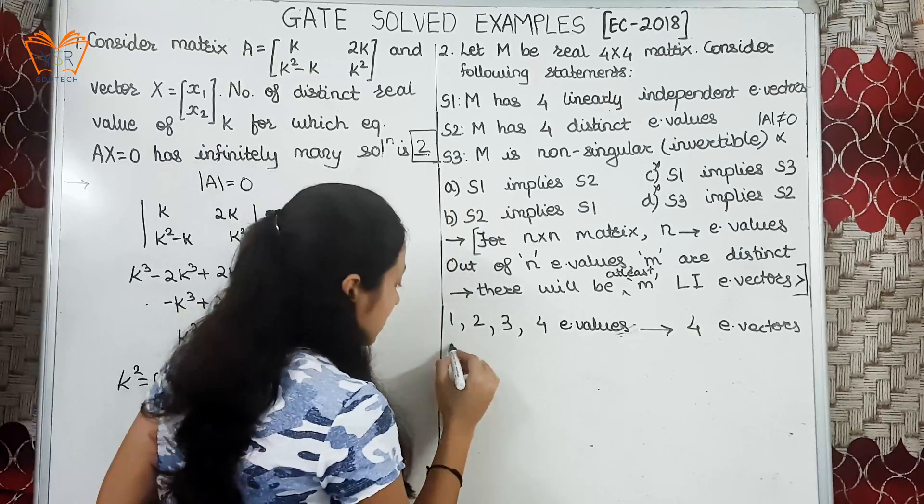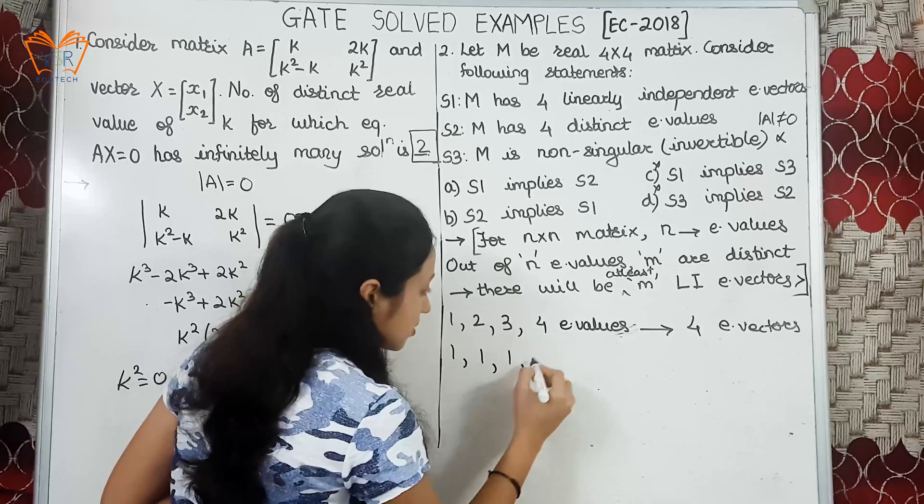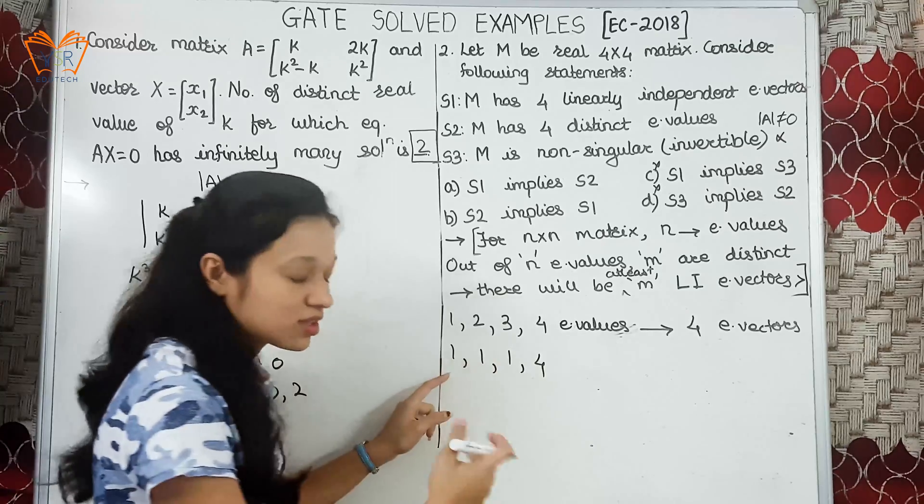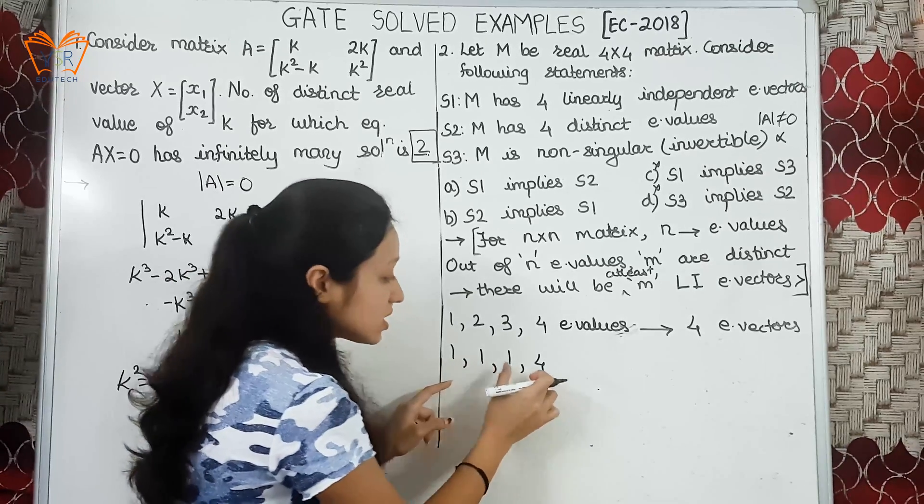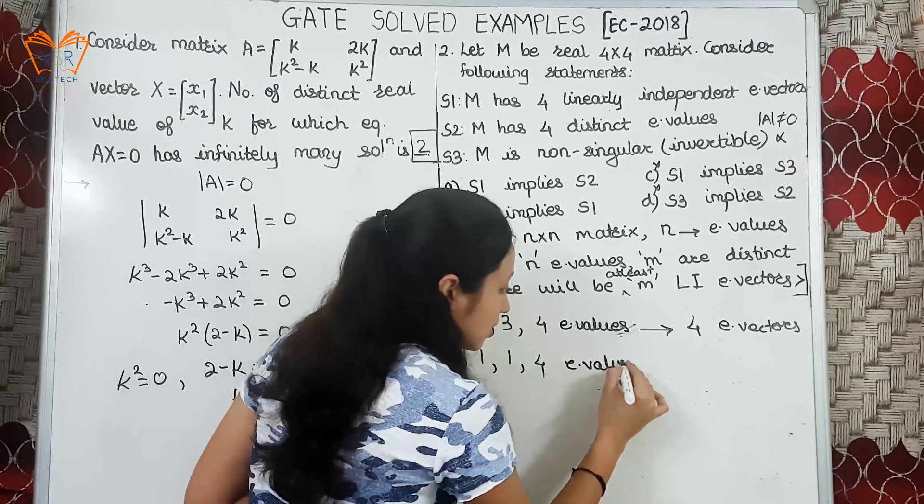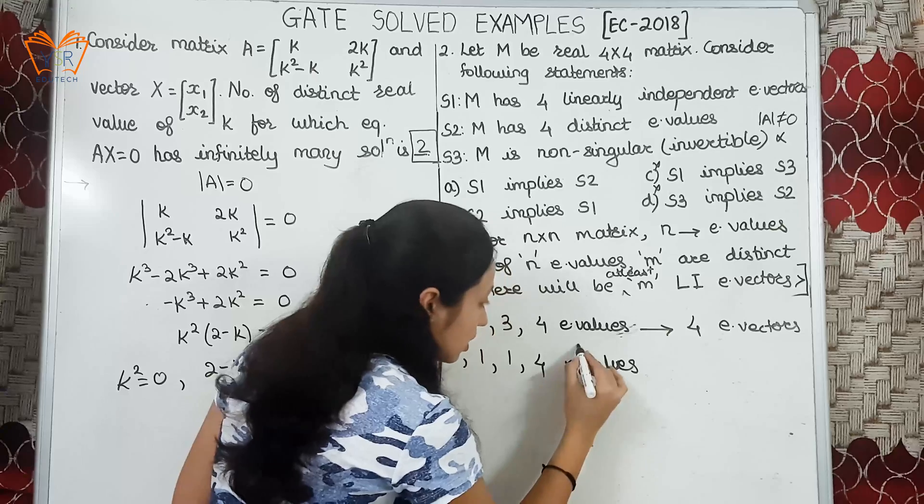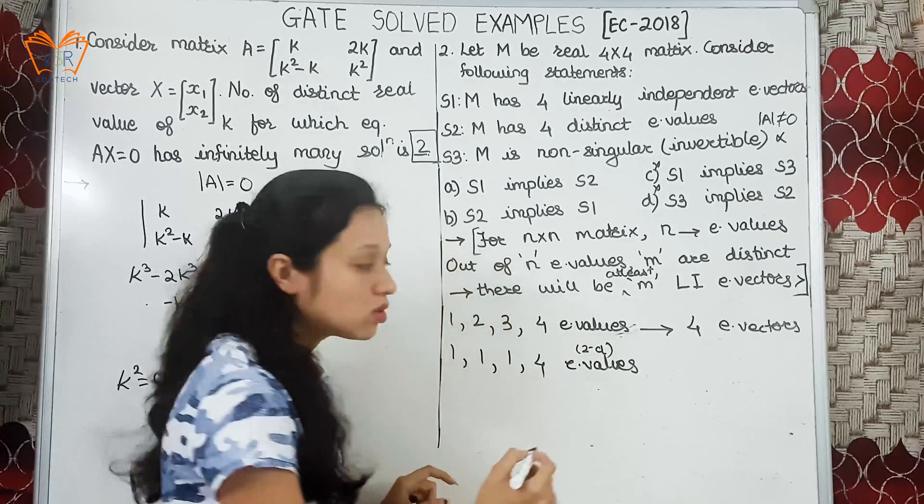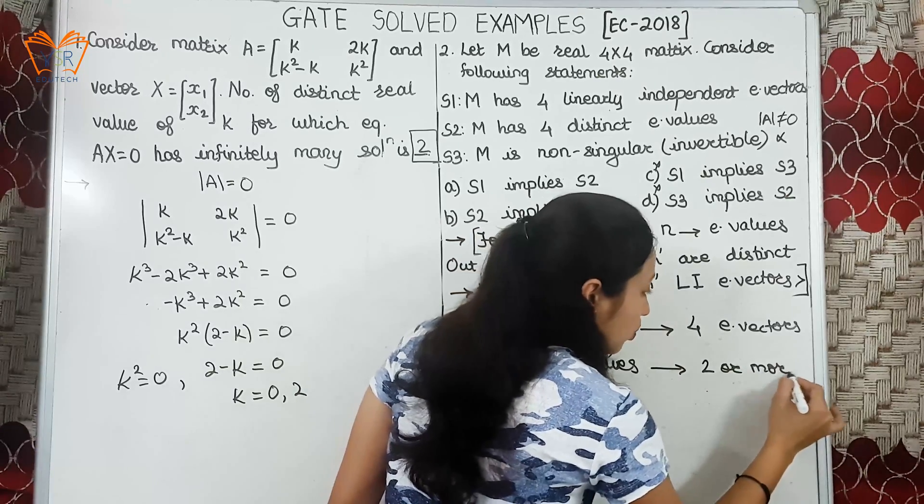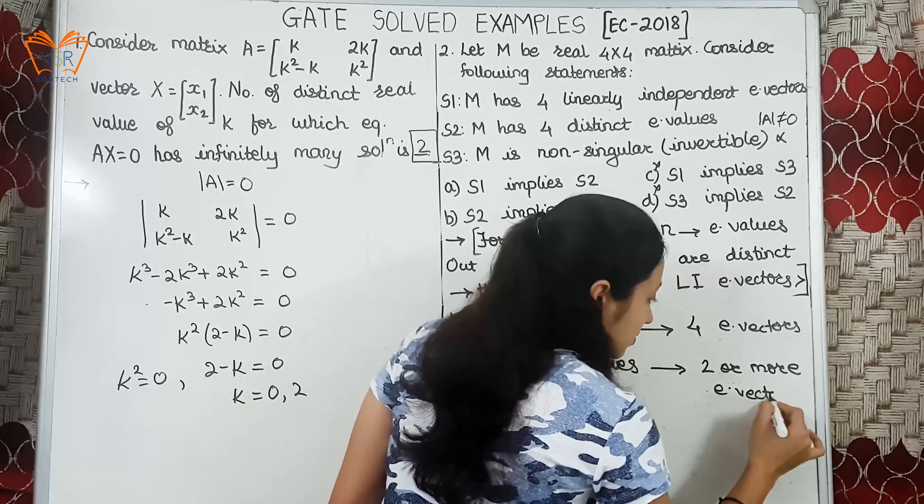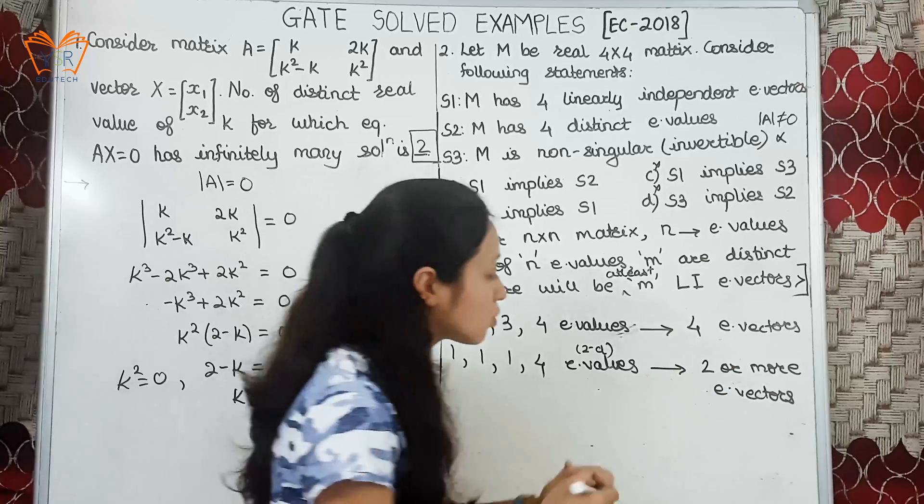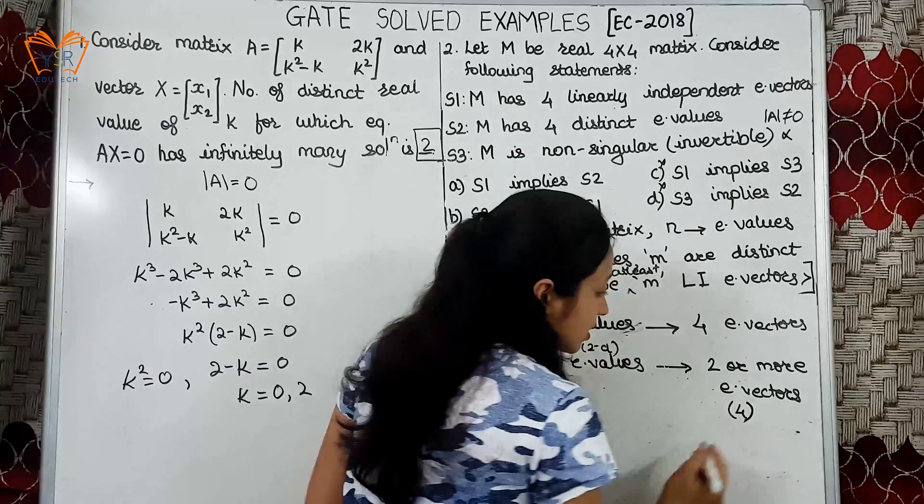If there is second case that says it has 4 eigenvalues but these are not distinct. So as you can see there are only 2 distinct eigenvalues. So there will be 2 or more linearly independent eigenvectors. 2 or more. So that means there can be 4 as well.